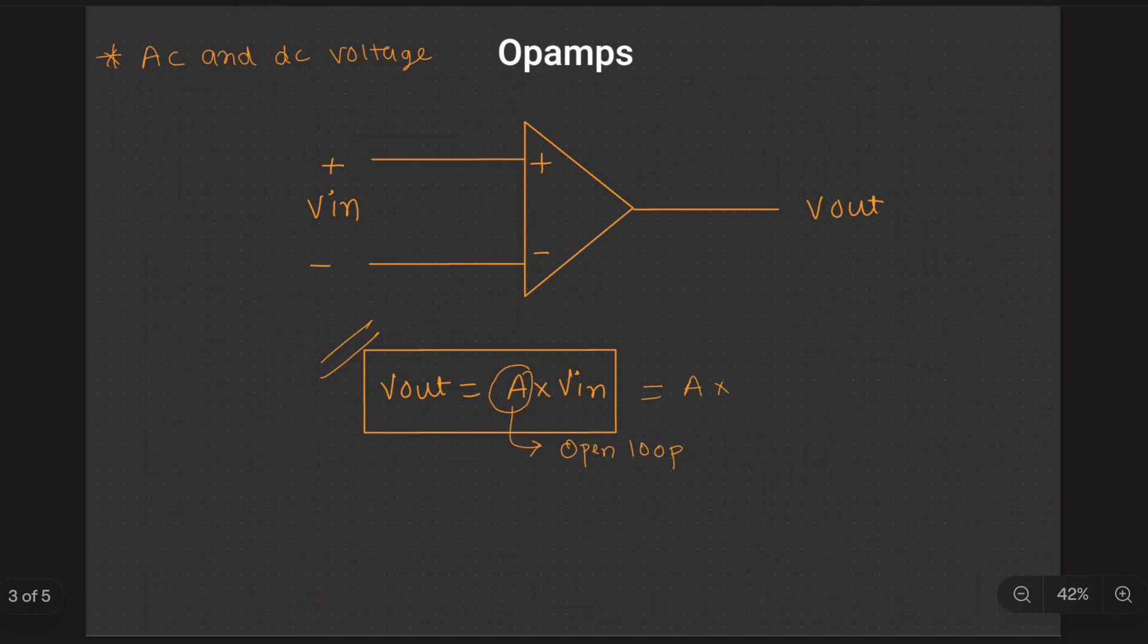This Vin we can write it as A is a gain and Vin can be written by Vplus, that is this Vplus, Vin plus minus Vin negative.